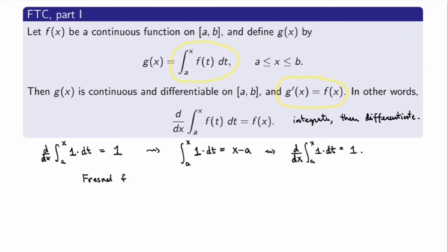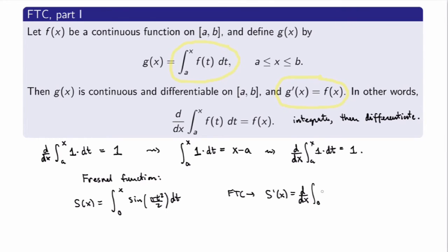An example is the Fresnel function, which appears a lot in physics, more specifically in optics. It is actually defined as an integral: the integral from 0 to x of sin(πt²/2) dt. It turns out this is the best way of writing the function — you can't write it down in any other way than as an integral. If you're dealing with such a function and want to calculate its derivative, the only way is using the FTC. So FTC tells us that S'(x), the derivative of that integral, equals sin(πx²/2), without having to integrate explicitly.